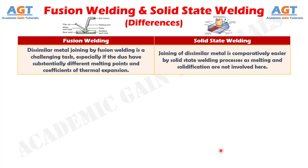Number six: dissimilar metal joining by fusion welding is a challenging task, especially if the two metals have substantially different melting points and coefficients of thermal expansion, whereas joining of dissimilar metals is comparatively easier by solid-state welding processes as melting and solidification are not involved.